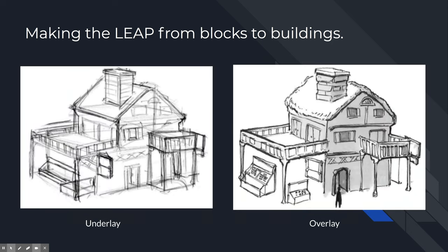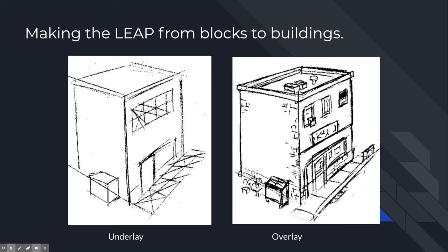Today's lesson explores how to make the leap from blocks to buildings — from sugar cubes stacked next to each other that represent blocks, squares that represent windows and doors, up to the point where it looks like a building and not just geometric toys. We start with an underlay, which is the drawing that has all the mistakes and all the calculations.